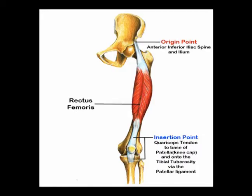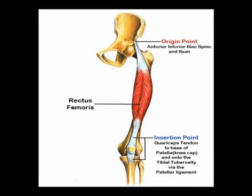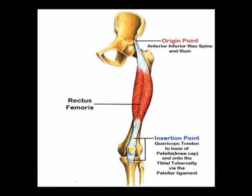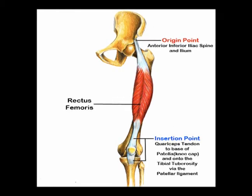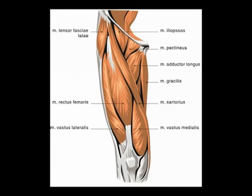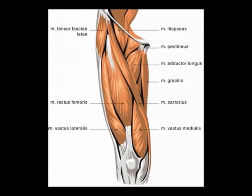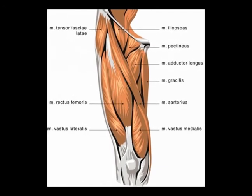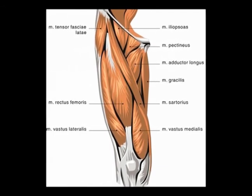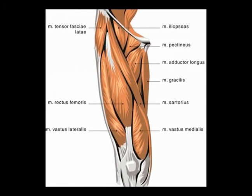The rectus femoris muscle originates on the pelvis, so it crosses the hip joint and it assists in hip flexion. But the primary function of all four of these muscles is knee extension.